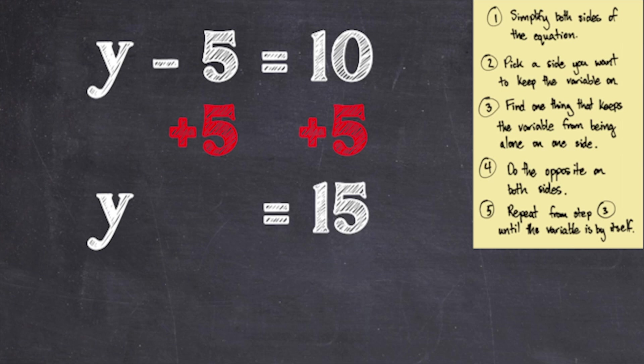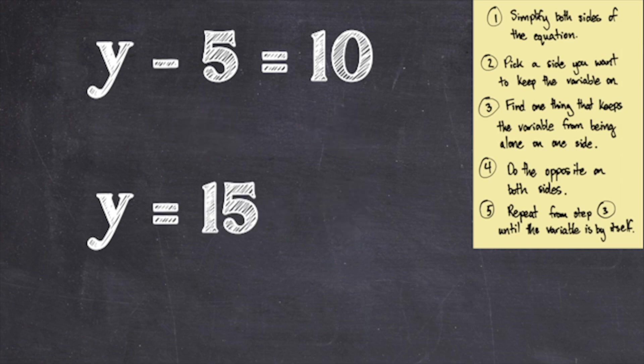Think back to our scale analogy — adding 5 weights to both plates kept the scale in balance, and we're doing the same thing here. The equation is staying balanced. Step 5: y is by itself, so we're done. In later problems we will have to go back to step 3 and do more work, but for this problem y equals 15 is the solution.